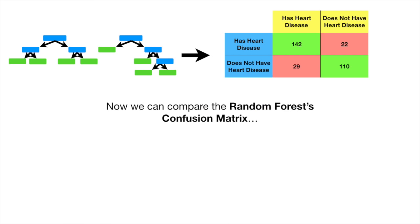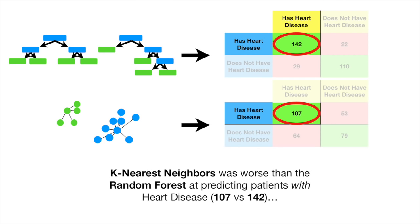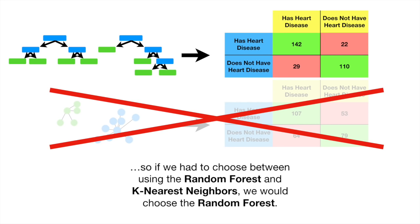Now we can compare the random forest confusion matrix to the confusion matrix we get when we use k-nearest neighbors. K-nearest neighbors was worse than the random forest at predicting patients with heart disease, 107 versus 142, and worse at predicting patients without heart disease, 79 versus 110. So if we had to choose between using the random forest and k-nearest neighbors, we would choose the random forest.